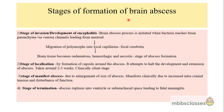Brain abscess formation takes weeks to develop and is divided into four stages. The first is the stage of invasion or development of encephalitis: bacteria reach the brain parenchyma via venous channels from the mastoid, causing migration of polymorphs and leukocytes into local capillaries, leading to focal cerebritis. Patients presenting in this first stage of invasion can be well managed with good antibiotic coverage. The second is the stage of localization, which remains clinically silent and takes around two to three weeks to develop.